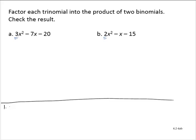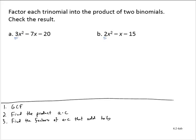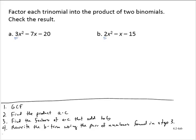The first step is to factor out the GCF — that should always be your first step in factoring. Second, find the product a times c. Third, find the factors of a times c that add to b. Fourth, rewrite the b term using that pair of numbers. That gives us a four-term polynomial, which we will factor by grouping.